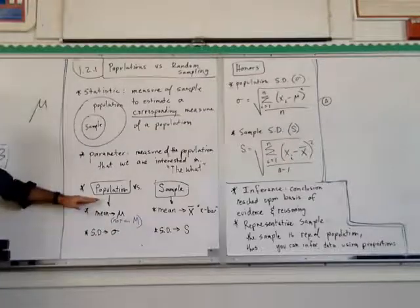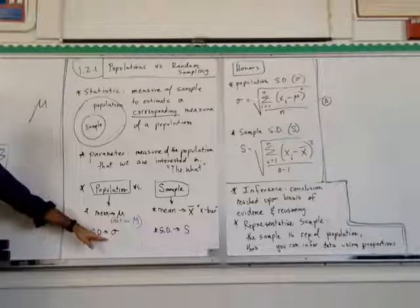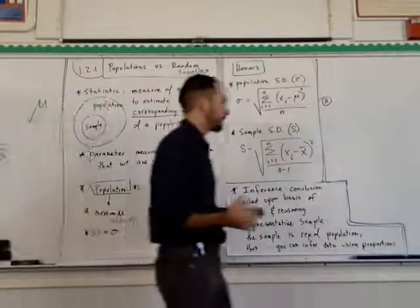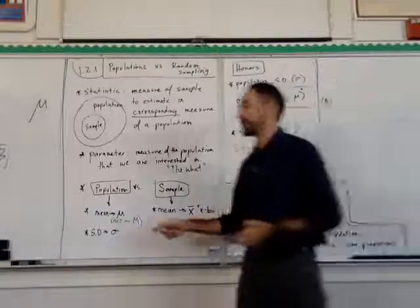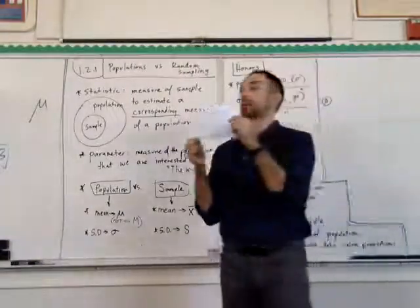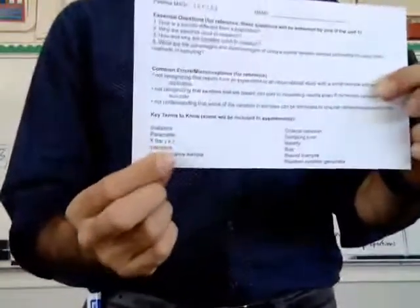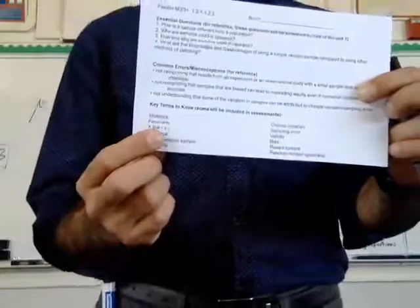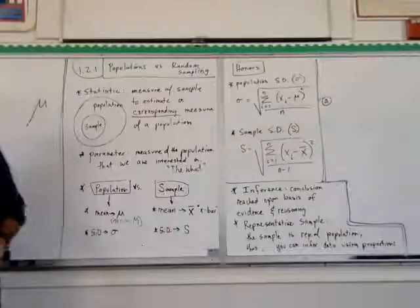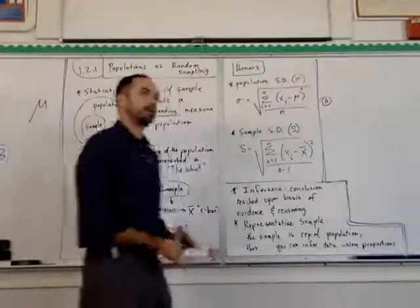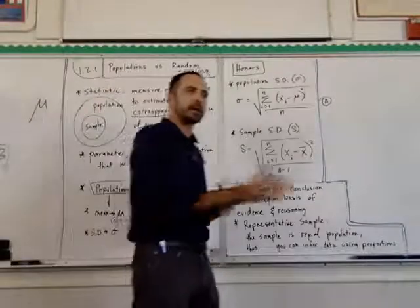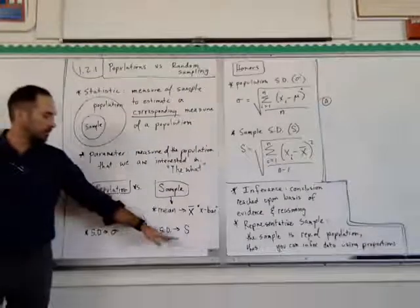For population standard deviation we're talking about sigma — we've been dealing with this because we've only been focused on drawing conclusions about the population. But when we're talking about the sample, we have something new: X-bar. X-bar is the mean for the sample — put a bar over that X. There's going to be some difference between the two, and we'll use that to make inferences. The standard deviation for a sample is denoted by s.